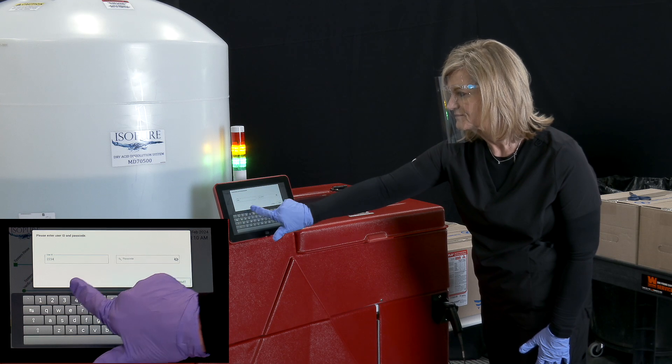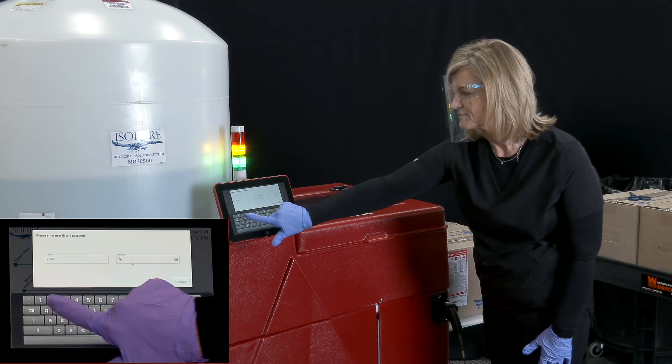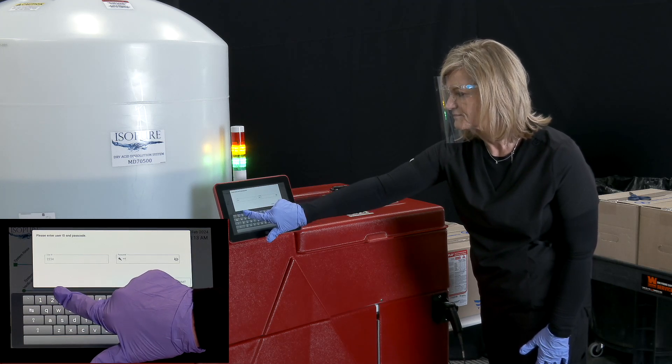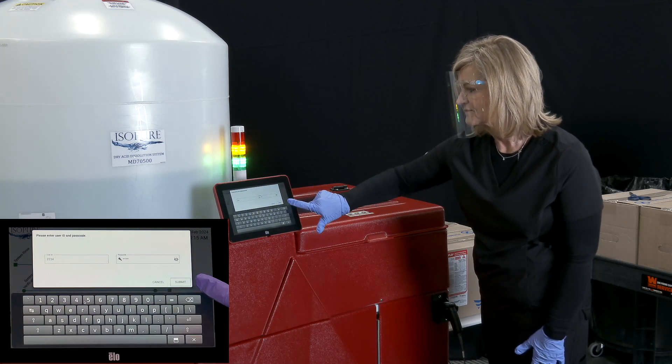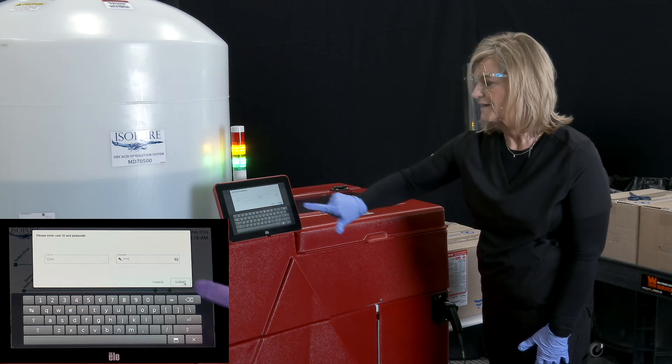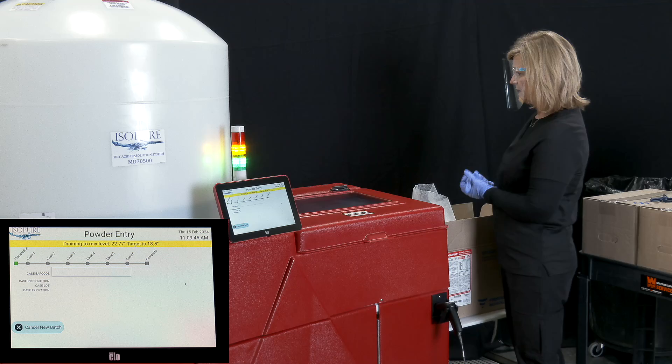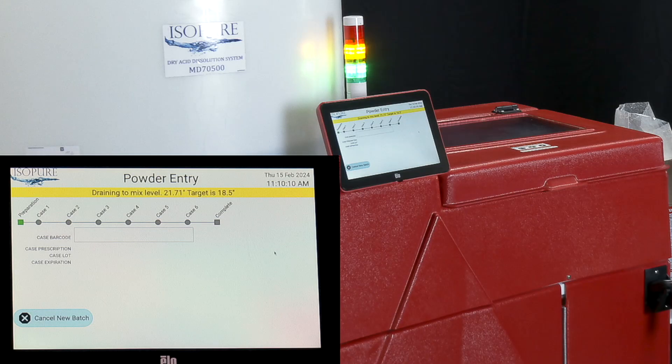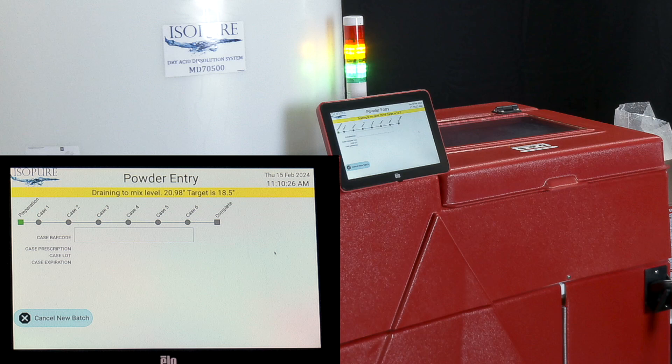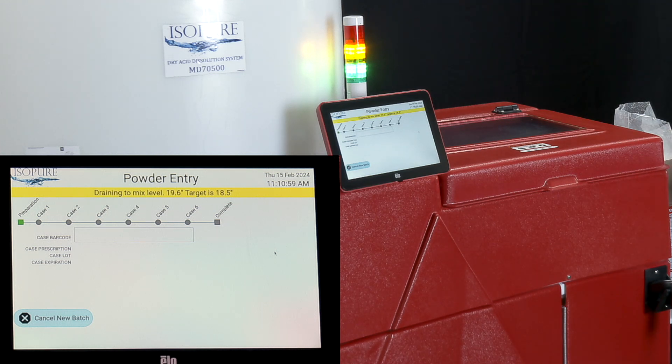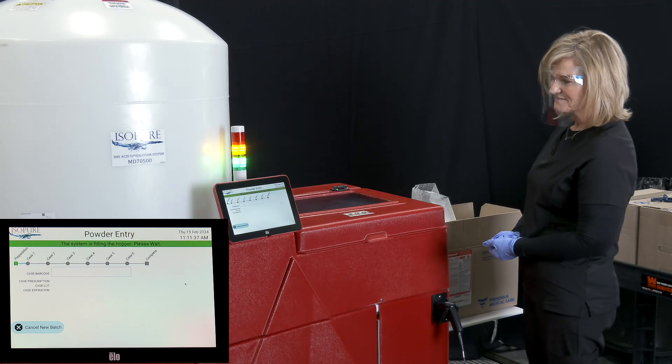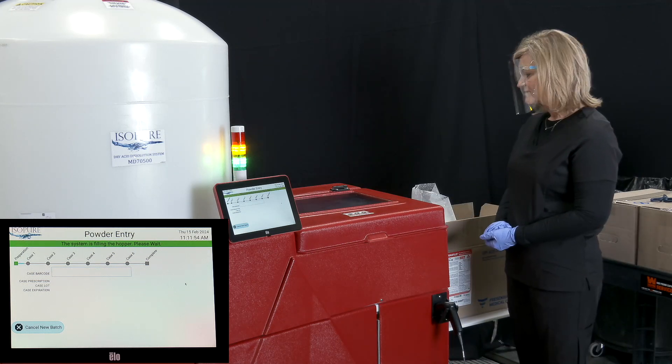Prior to scanning the first case of dry acid, the operator will again be prompted to re-enter their user ID and passcode. Acumix will automatically calculate the number of cases required based on the batch size you selected. This total case count is indicated on the initial powder entry screen. The shelf is designed to hold maximum two cases.